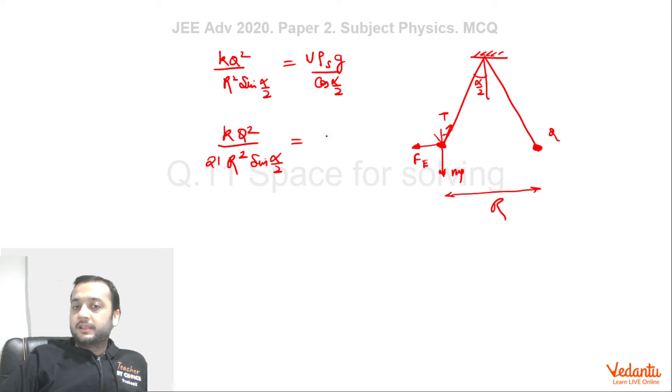That will be equals to net Mg effective. So we can say that Mg will be acting in a downward direction and buoyance force will come into picture in the upward direction. So this is Mg minus buoyance force which is V into density of liquid which is 800 into gravity divided by cos of alpha by 2. Now you can see that if you take 21 this side and cos alpha by 2 this side, we can just bring cos alpha by 2 this side. So this expression.